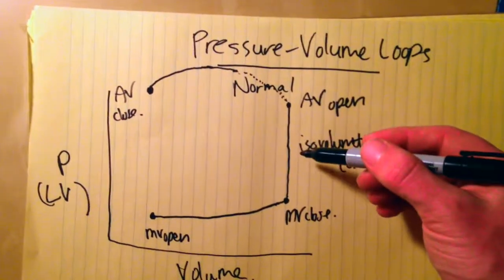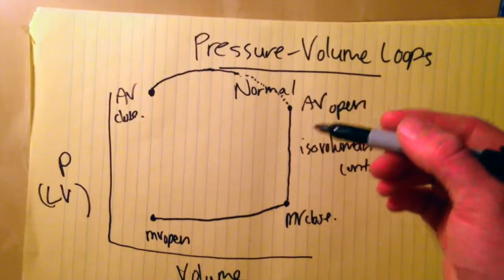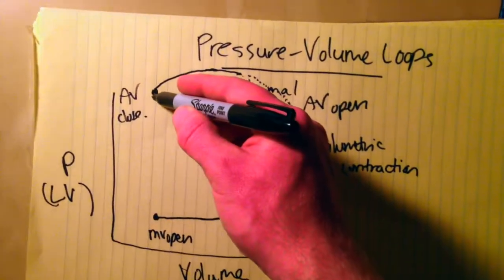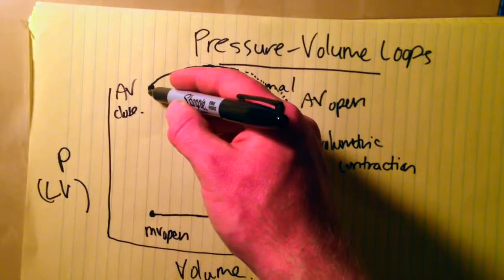And again, as we remember from this side of the curve, when both valves are closed, the volume in the ventricle cannot change as a result. But the ventricle is relaxing and the pressure is decreasing.